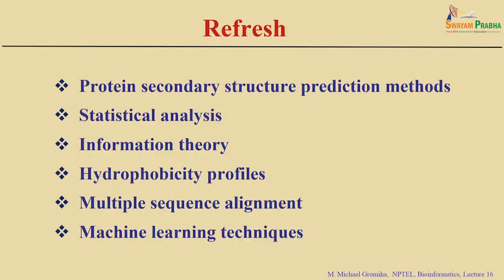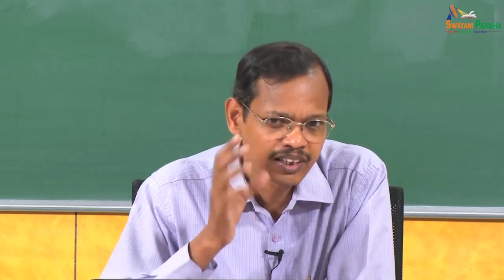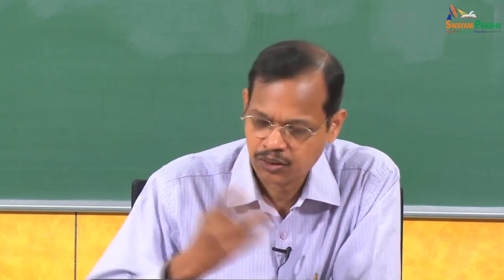Then we discussed about machine learning techniques, where all the information is trained using machine learning methods like neural networks or support vector machines to predict secondary structures. We also discussed the consensus method — ensemble-based methods or meta-servers — which combine the output of different methods using voting to get the final output.